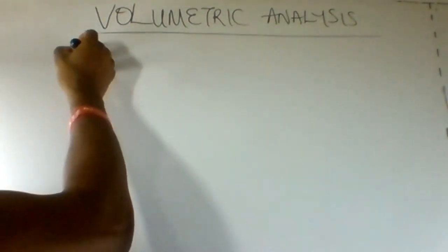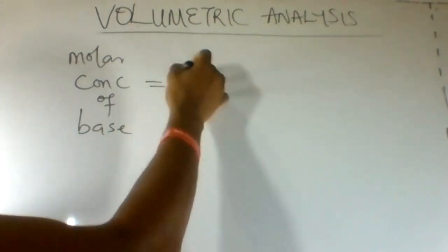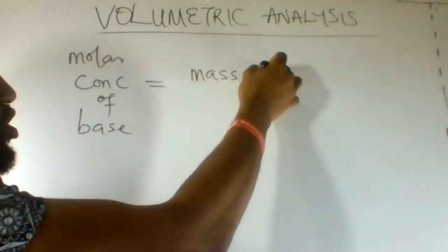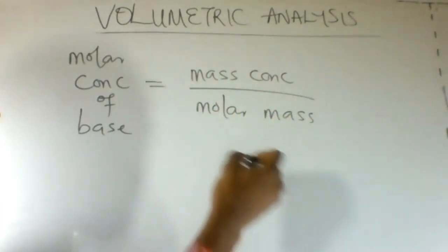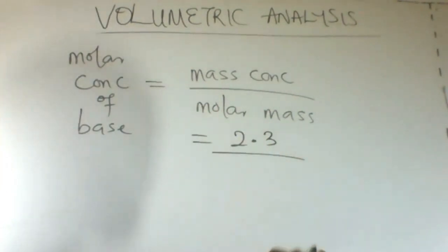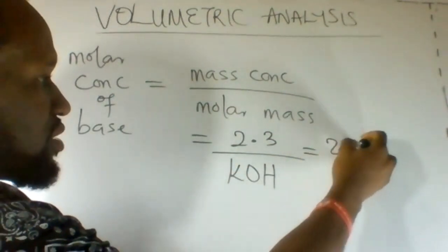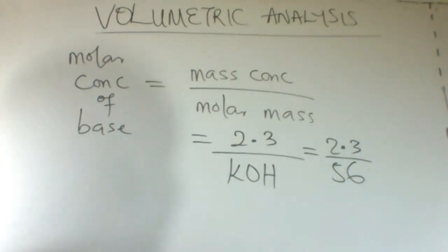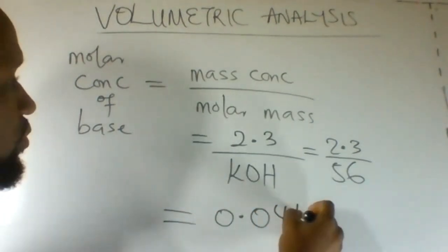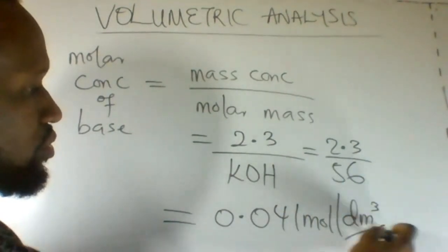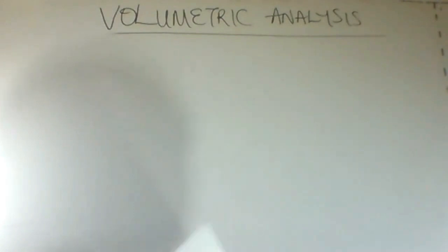Therefore, molar concentration of the base equals mass concentration divided by the molar mass of the base. The mass concentration is given as 2.3 grams per dm³. The molar mass of KOH is 56. So we have 2.3 divided by 56 grams per mole. Our answer is 0.041 moles per dm³.